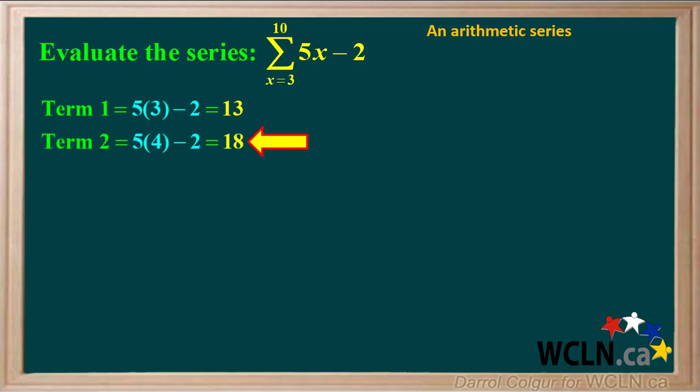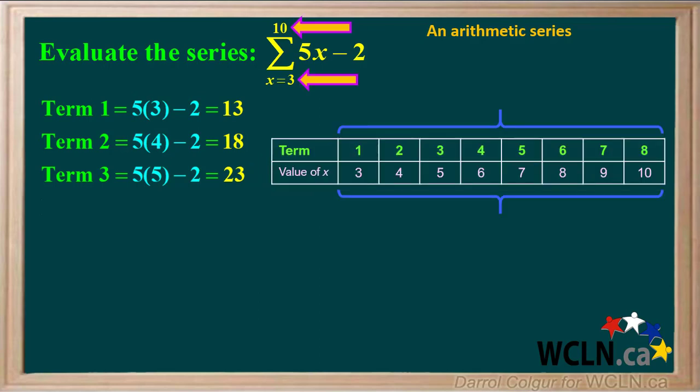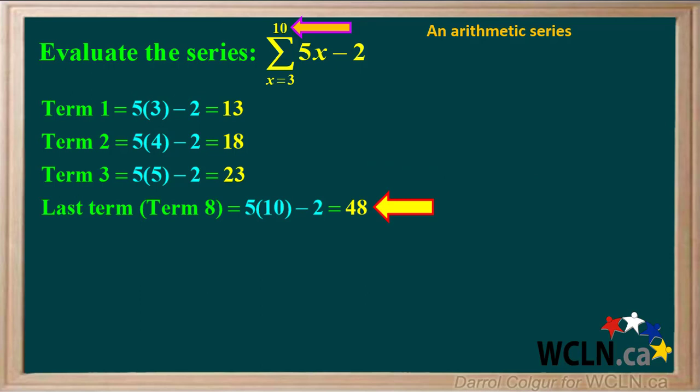For the second term, we put in 4 for x, giving us a value of 18. For the third term, we put in 5 for x, giving us a value of 23. Because the values of x range from 3 to 10, this series has 8 terms. For the last term, which is term 8, we put 10 in for x, giving us a value of 48.